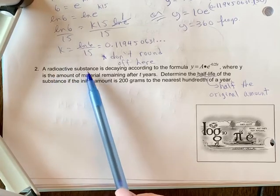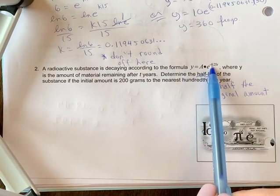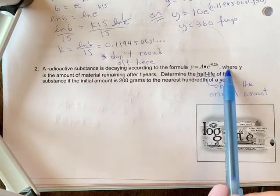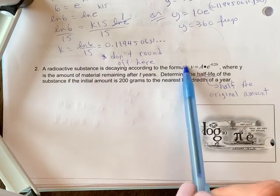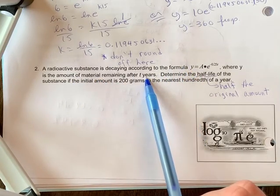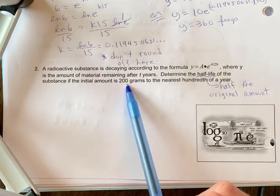Number two: A radioactive substance is decaying according to the formula y equals A times e to the exponent negative 0.25t, where y is the amount of material remaining after t years. So that's your final amount, t is your time. Determine the half-life of the substance if the initial amount is 200 grams to the nearest hundredth.